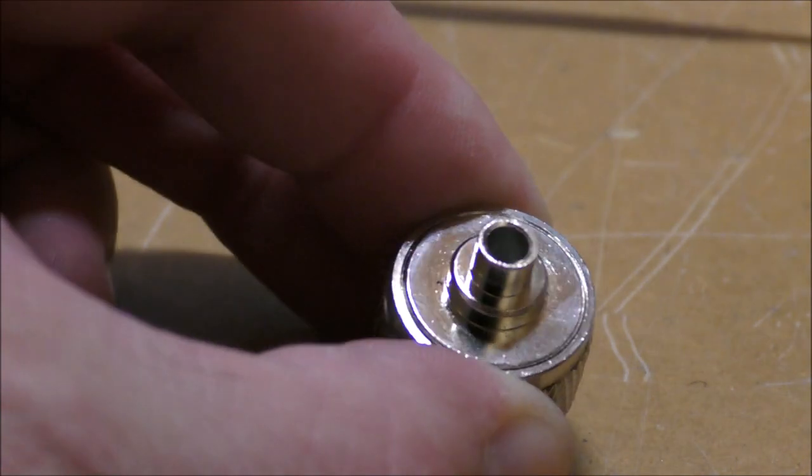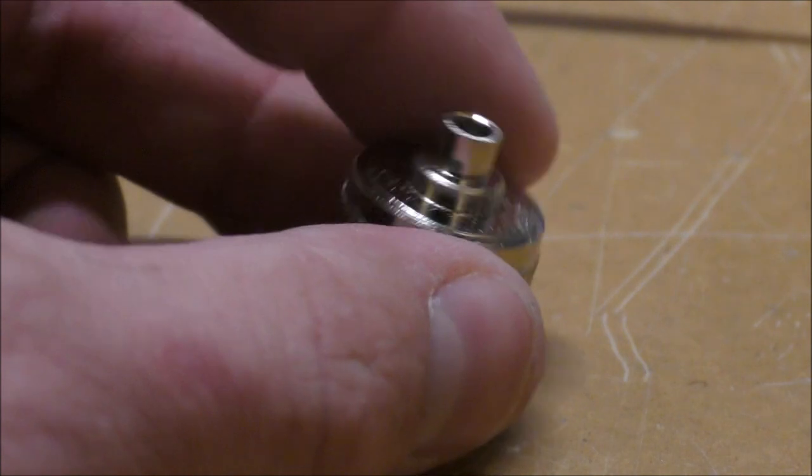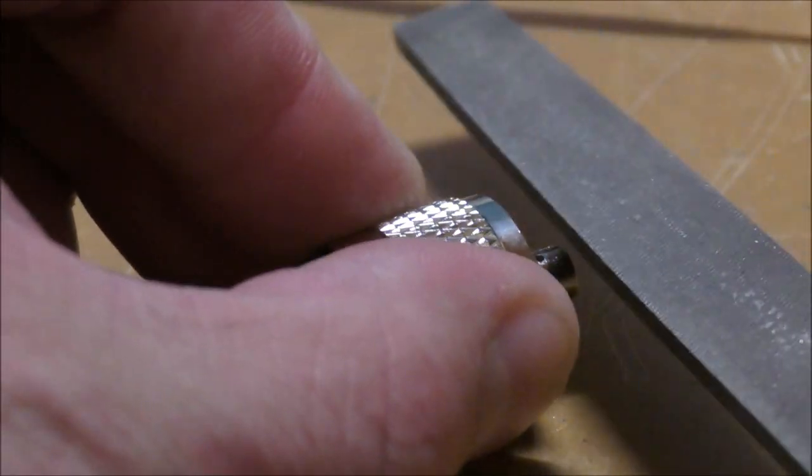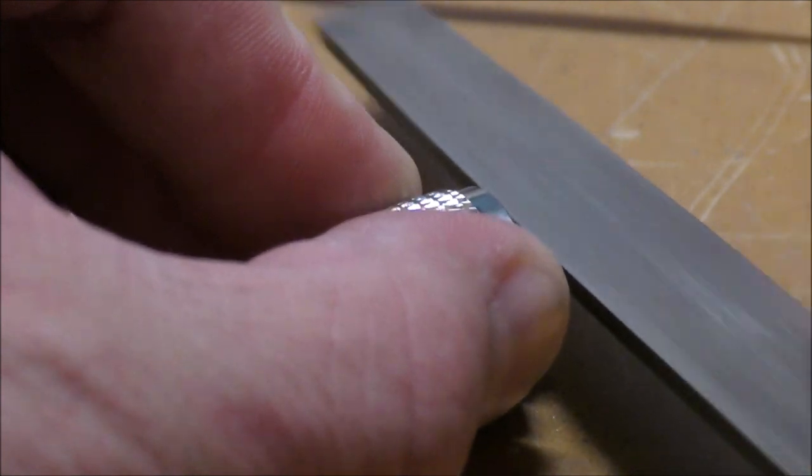And you can see that it's a slightly different color. You can also file around the hole so that it will flow a little bit better, but generally that's not required.